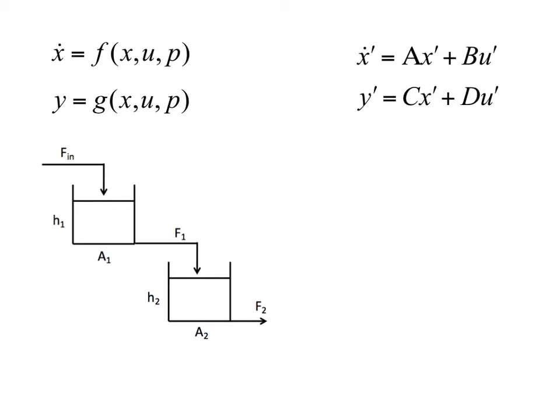In this screencast we use a simple two non-interacting tank height problem to illustrate how we go from our general nonlinear modeling equations with respect to the states and the outputs to the linear state space form. So that's our objective. The first thing we want to do is start out and write overall material balance equations to form the general nonlinear model.